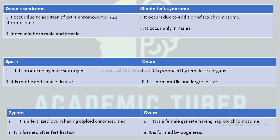The next difference is between zygote and ovum. Zygote is a fertilized ovum having a diploid chromosome number, whereas ovum is a female gamete having a haploid chromosome number. Zygote is formed after fertilization, whereas ovum is formed by oogenesis.